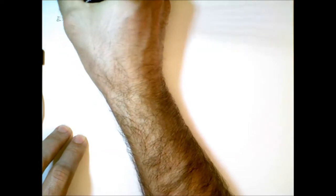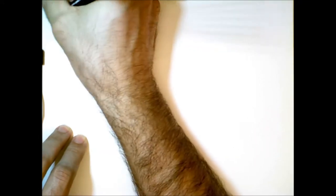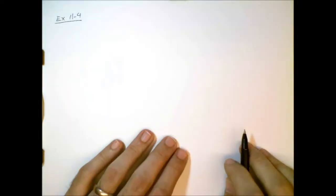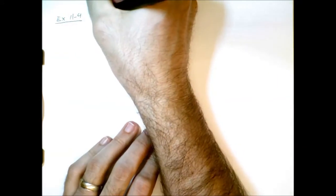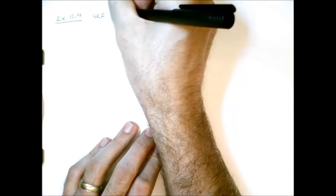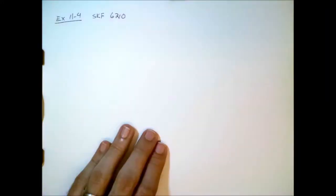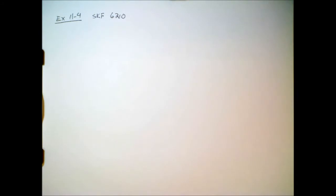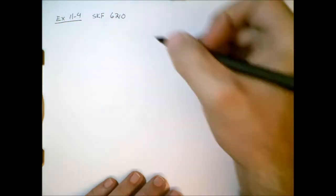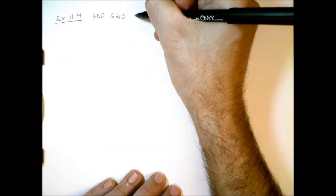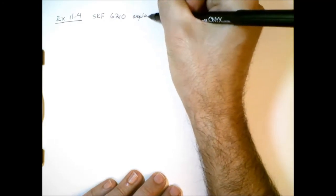Okay, let's go through an example. This is example 11-4 from your textbook. We're told we're dealing with an SKF bearing, that's the name brand, and it's model 6210. This bearing is an angular contact bearing.